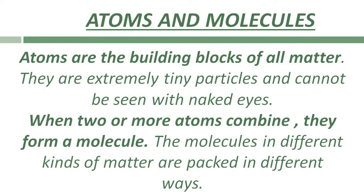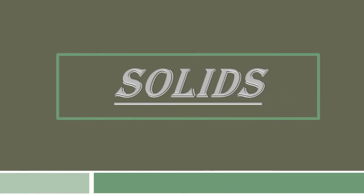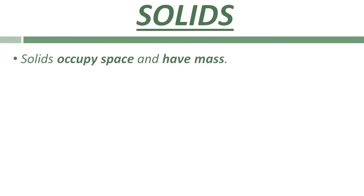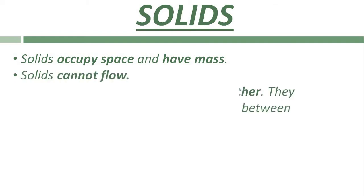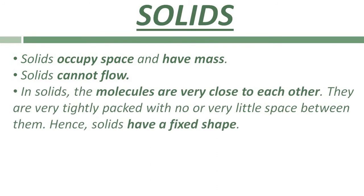Let us learn more about the properties of different forms of matter. Let's start with solids. The properties of solids are: all solids occupy space and have mass. Solids cannot flow. They have a definite volume. In solids, molecules are very tightly packed — they are very close to each other with no or very little space between them. That is why solids have a fixed shape.